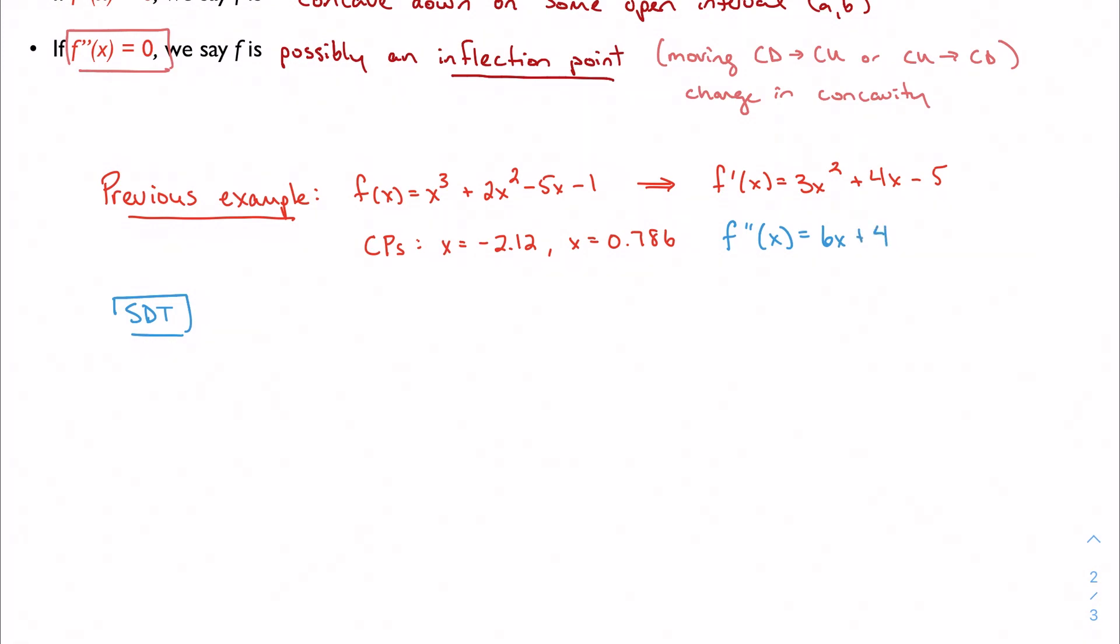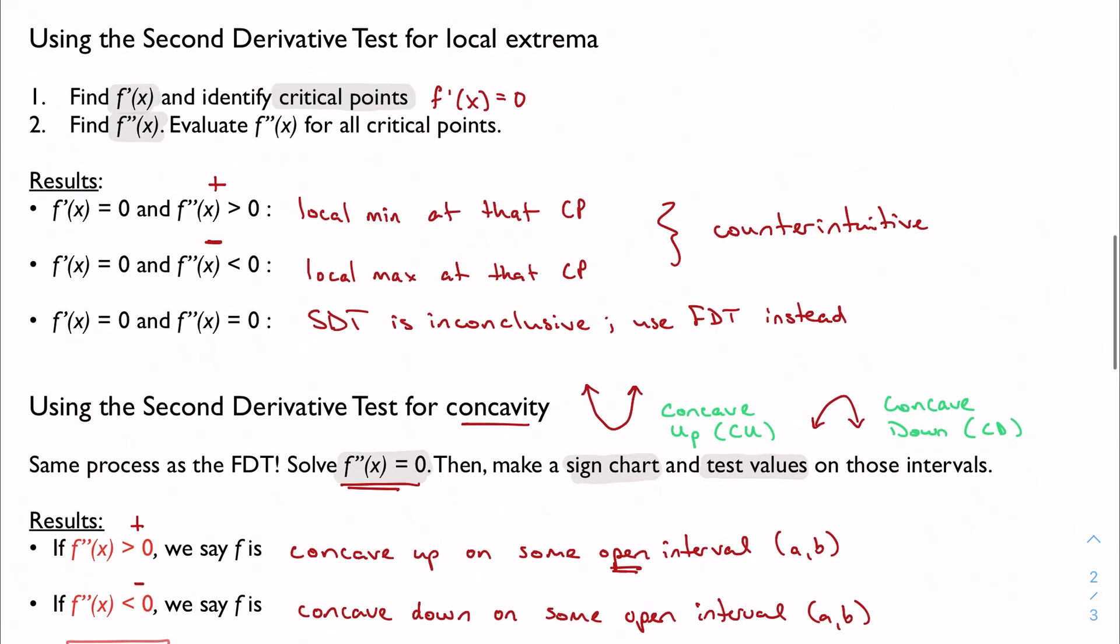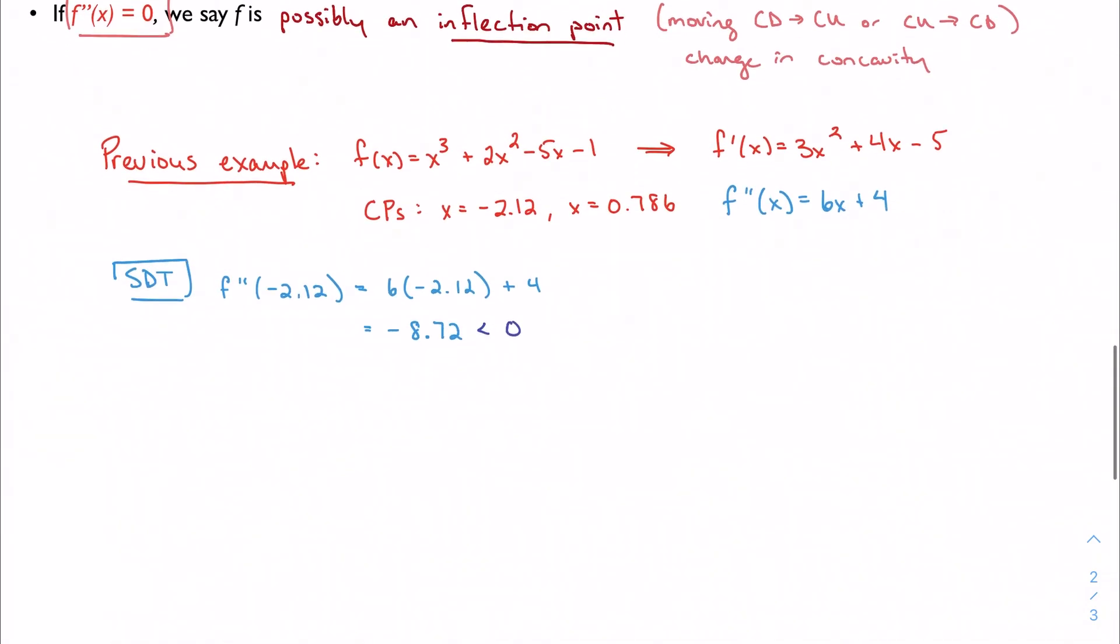I'm going to test those two critical points. So if I test negative 2.12, I'm going to get 6 times negative 2.12 plus 4. Fortunately, I did this ahead of time. So we get negative 8.72. And that is, of course, a negative number. And we said that if I get a negative number, I have a local maximum. And that checks out with what we did in the first video, in the first derivative test video.